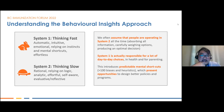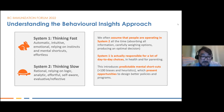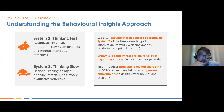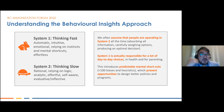We can think of System 1 as the part of our brains that helped us survive in the early days of humankind — to avoid being eaten by saber-toothed tigers. System 2 is the slow thinking system: the rational part that relies on logic, is analytic, effortful, self-aware, evaluative, and reflective. The main contribution of behavioral sciences to public health is recognizing that most people often operate in System 1, yet in public health we sometimes assume people are operating in System 2.